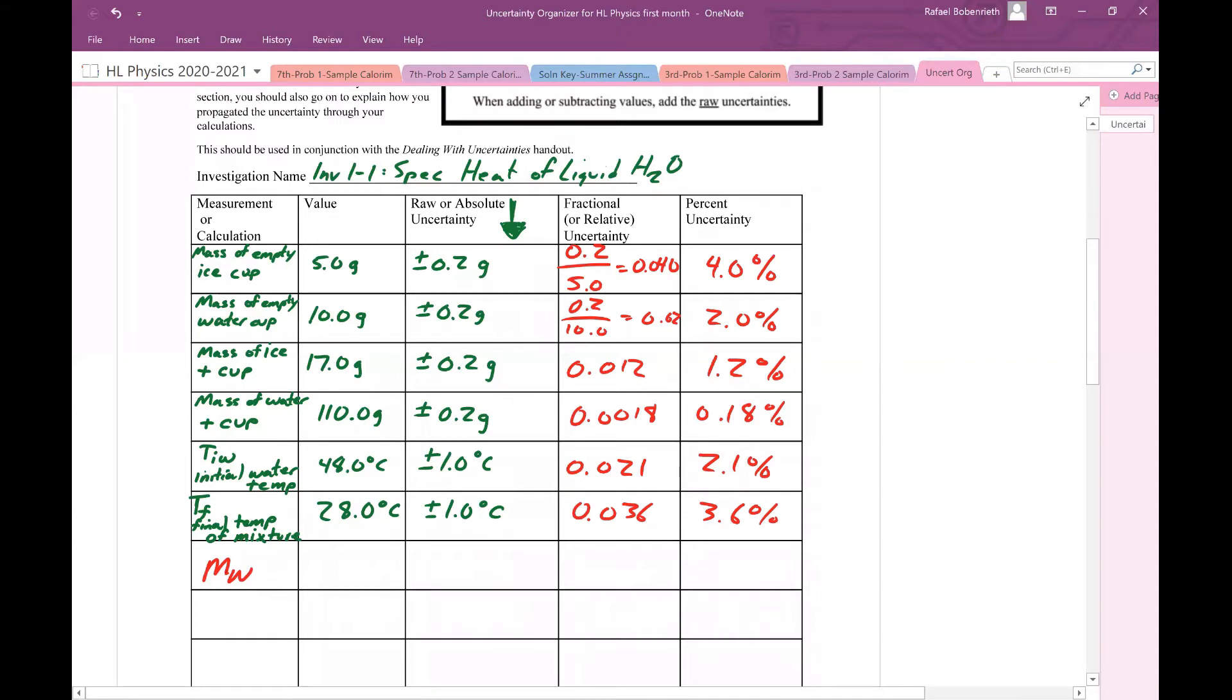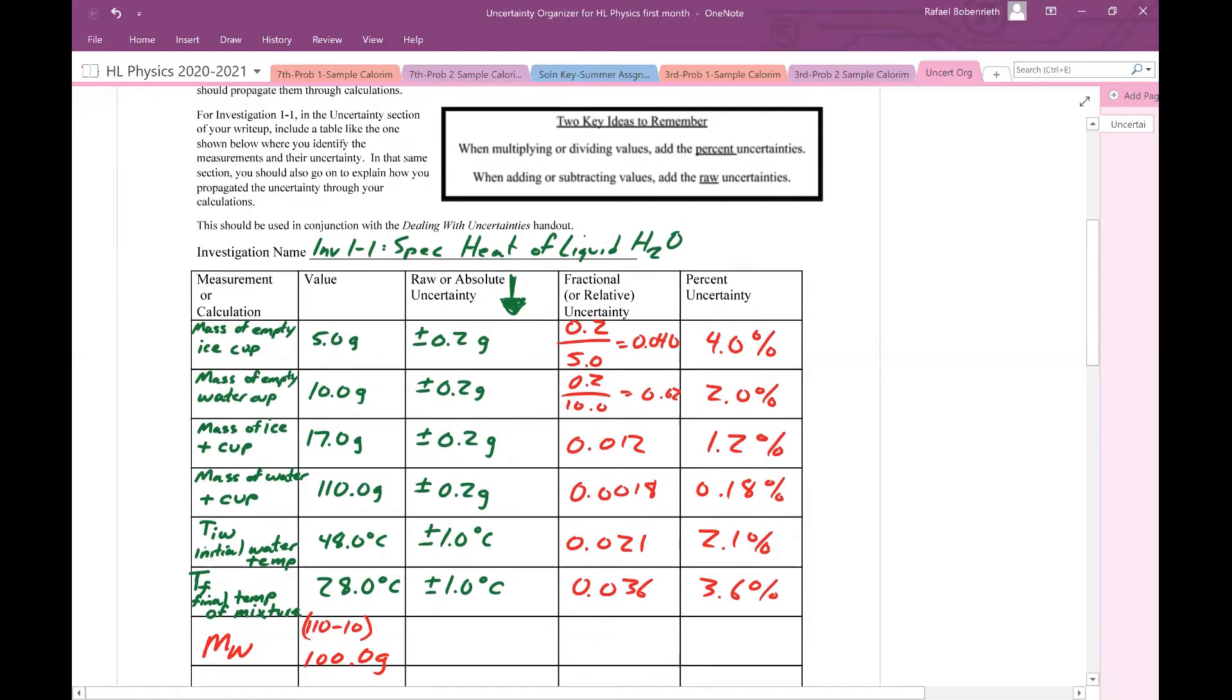The mass of the water is really going to be the difference, 100.0 grams if I keep the significant figures, which I should. Now, how do I figure out the uncertainties related to that? Well, I have to look at what I did. In order to get the mass of the water, what did I do? I took two values and I subtracted them from each other. Let's go back up here to this little box, because this box has two key ideas that we need to remember.